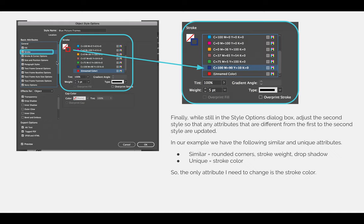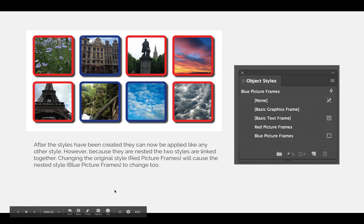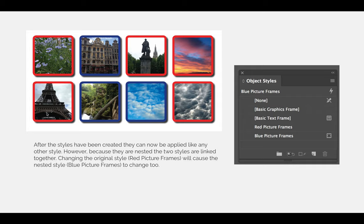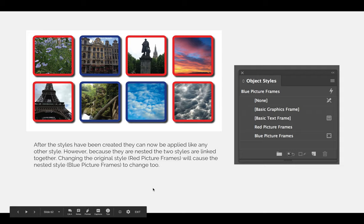Also of note: because I did not change any of the other settings, every other setting for that object style is still linked to the red picture frames. So if I modify the red picture frame style in any way, those changes will flow downhill to my blue picture frame. After applying the two styles — red picture frames to five objects and blue to three — because I nested or linked the blue style to the red, they're forever bonded. So modifying the blue picture frame style will not affect the red ones, but since the red frame style is at the top of the hierarchy, any changes to it will flow downhill to the blue one, except for attributes where I've broken the connection. So if I change the red picture frames to be pink, the blue picture frames will not automatically change in color.